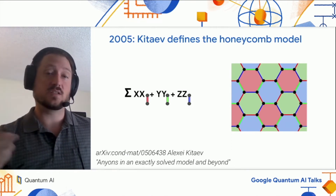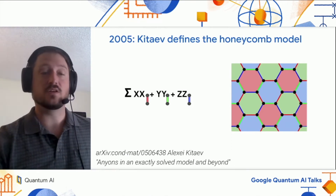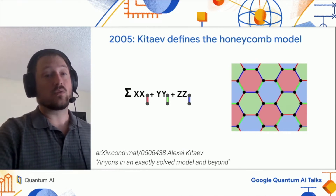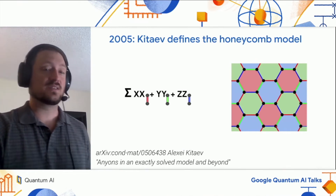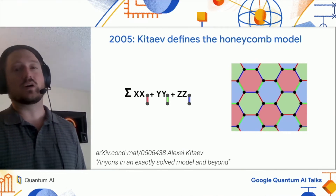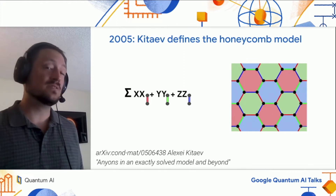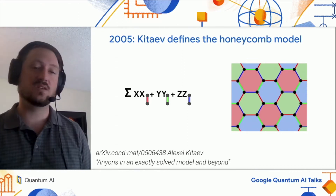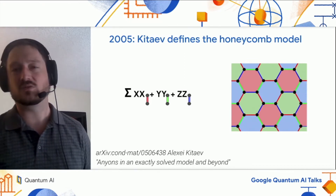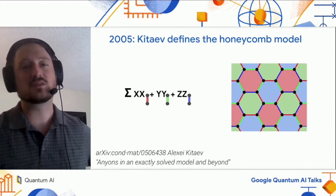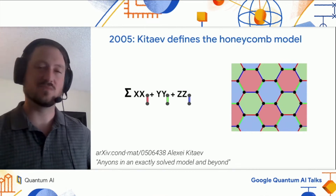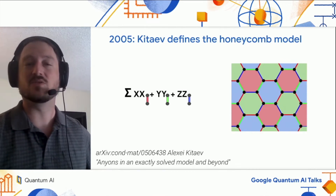and each of the colored lines is an edge representing an interaction between the qubits. Each edge has a type, indicated here by its color. Red edges are XX interactions, green is YY, and blue is ZZ. You can shuffle all the colors around and the types and this thing still works, so don't worry too much about remembering which is which.